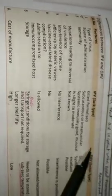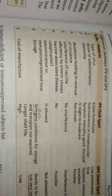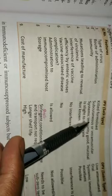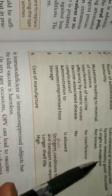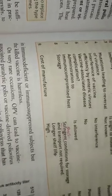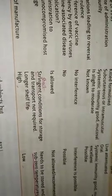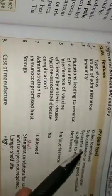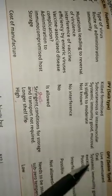Comparing IPV and OPV: IPV uses killed formalised virus while OPV uses live attenuated virus. IPV is given subcutaneously or intramuscularly by injection, while OPV is given orally. IPV provides good systemic immunity with moderate mucosal immunity, whereas OPV provides both excellent systemic and excellent mucosal immunity, especially intestinal, leading to release of immunoglobulins at the mucosal level.